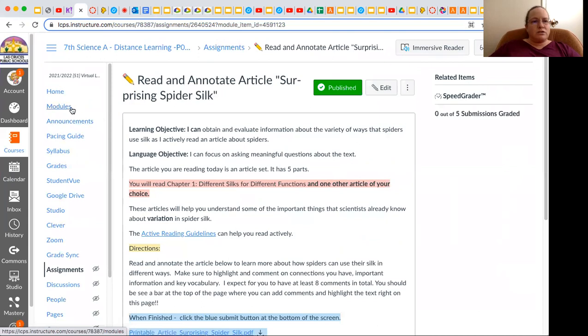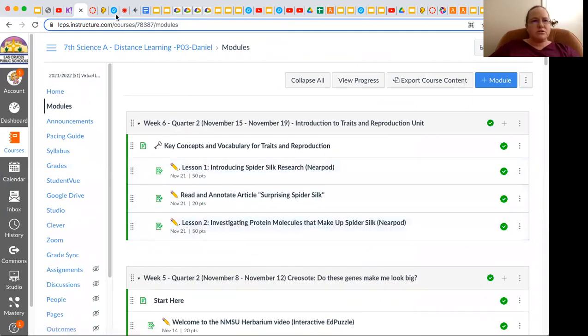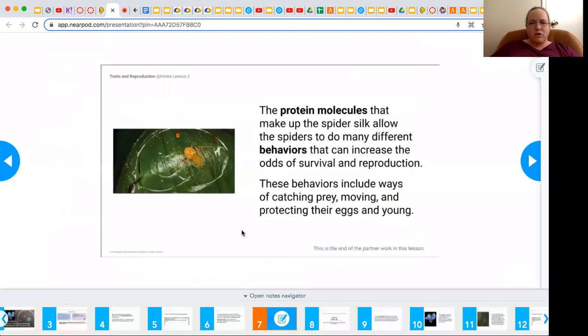And now we're going to go to the last lesson, which is lesson two, and it's investigating protein molecules that make up the spiders. So you're going to come over here. Now we know that protein molecules make up the spider silk that allows the spider to do many different behaviors that can increase the odds of survival and reproduction. So you're learning about spider silk in the reading. And then now you're going to kind of think about it as flexibility in this lesson.